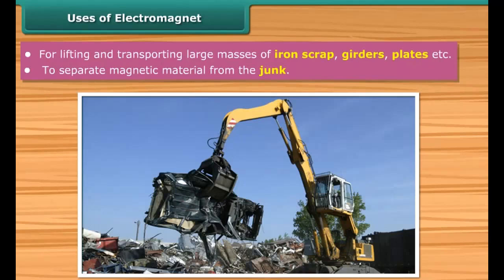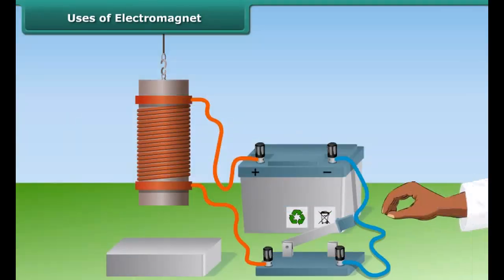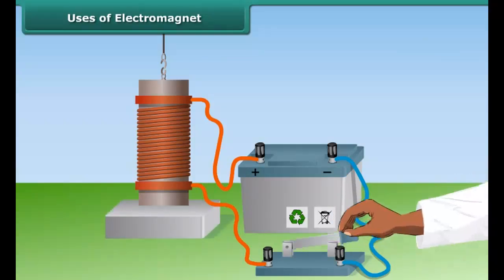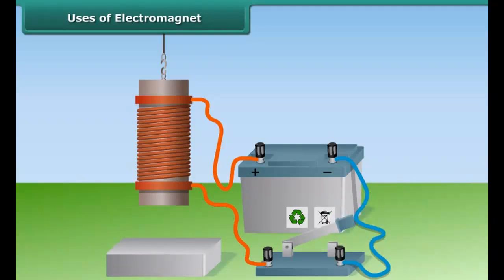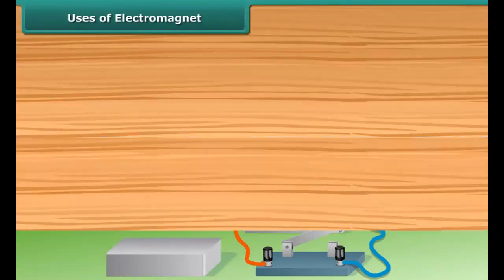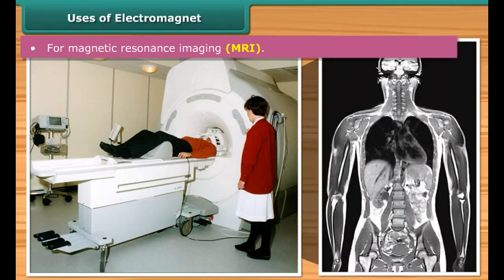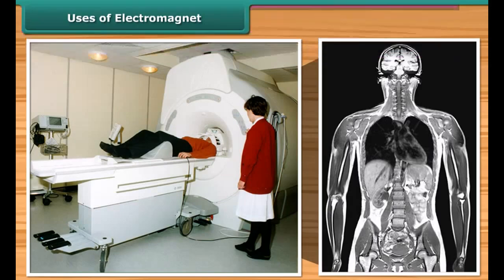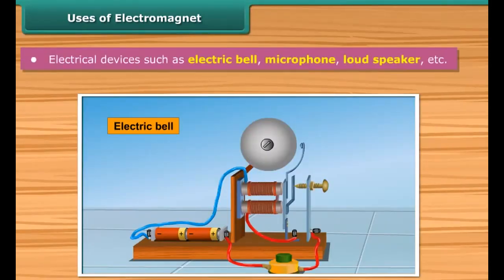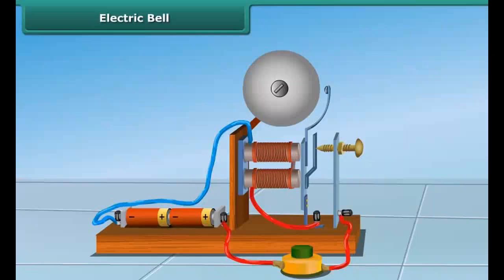The main advantage of electromagnets over normal magnets is that they can easily be switched on and off, and the strength of the magnetic field can be effectively controlled. Electromagnets are also used in magnetic resonance imaging (MRI) to get a detailed image of the inside of the body to diagnose diseases. A variety of electrical devices such as electric bells, microphones, and loudspeakers also make use of electromagnets.